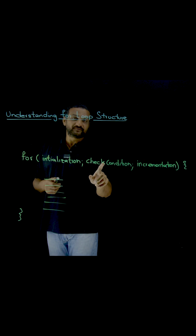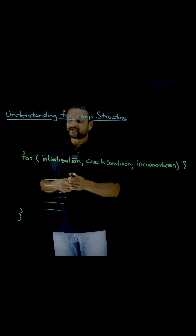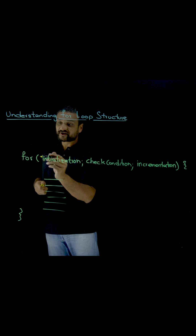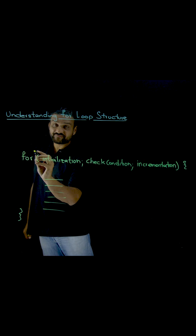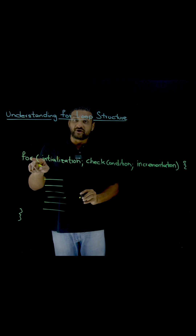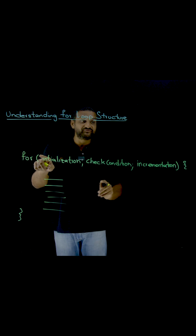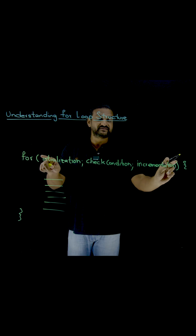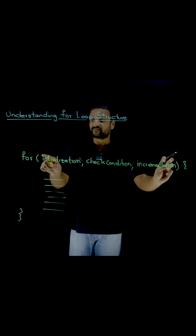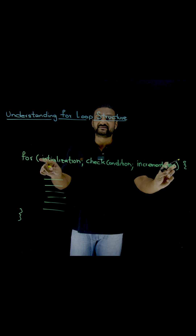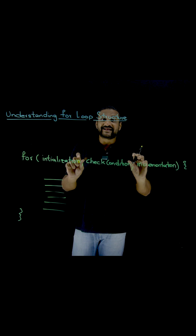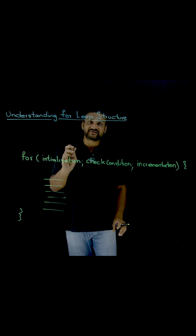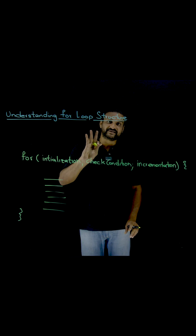This is the syntax for the for loop. 'for' is the keyword used for the for loop, and it comes with parentheses. Every for loop will come with these parentheses. Within this parentheses, we will be having three statements.